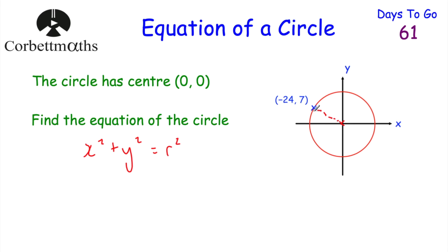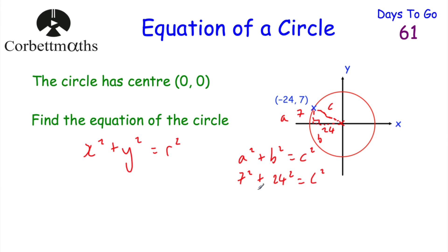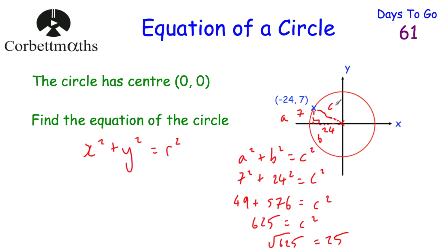The point is (−24, 7), so if we draw a right-angle triangle, it goes 24 across and 7 up. Using Pythagoras' theorem — a squared plus b squared equals c squared — we get 7 squared plus 24 squared equals c squared. That's 49 plus 576, which gives 625 equals c squared. The square root of 625 is 25, so the radius of the circle is 25.